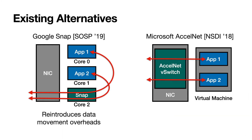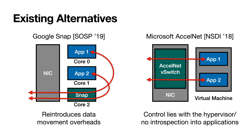Another alternative is Microsoft's Xonet. What Xonet does is move a virtual switch to the NIC, and because this virtual switch can interpose between applications and the network, it can also implement some policies. The problem is that in Xonet, control lies with the hypervisor, so it has no visibility into the applications running inside virtual machines. Many of the policies we want to implement require visibility into applications — for example, to prioritize traffic from one application over another, we need to know which application the traffic is coming from, or we need access to the kernel's data structures for open sockets.